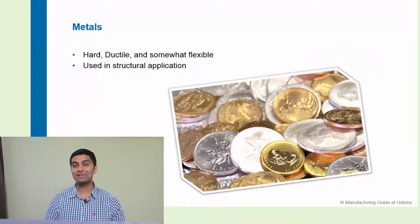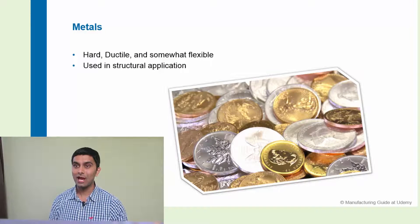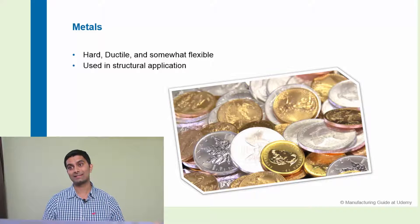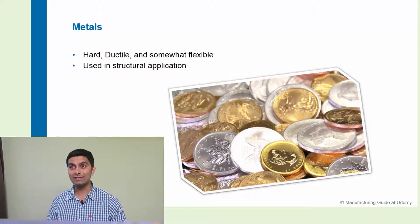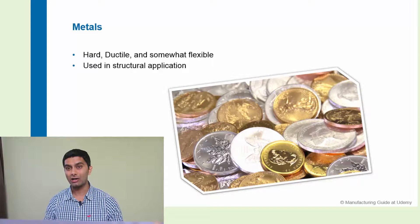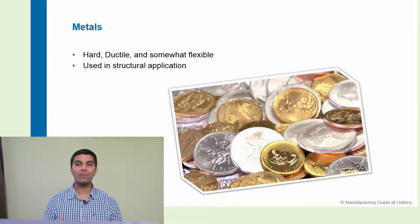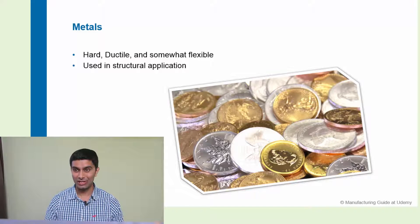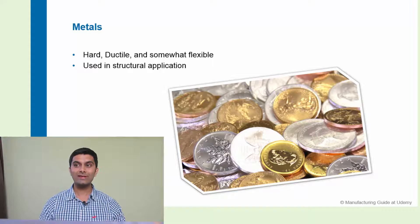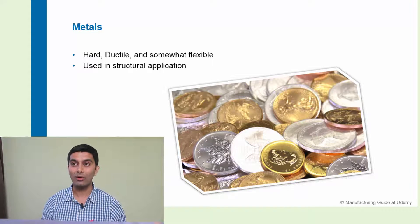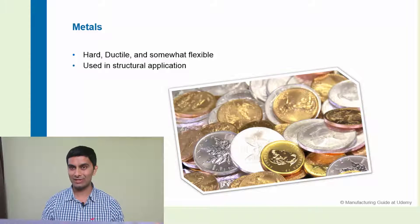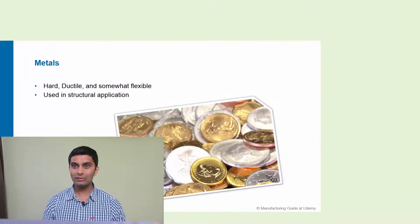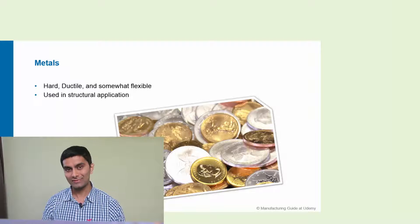Metals are hard, ductile, and somewhat flexible materials. The strong metals such as steel and titanium are actually very strong. Their combination of strength and flexibility makes them useful in many structural applications. When the surface of a metal is polished, it has an amazing appearance. We use metals every day in our lives.